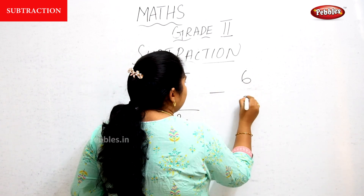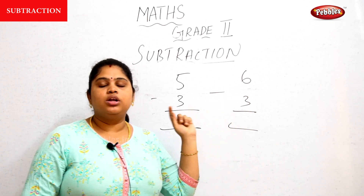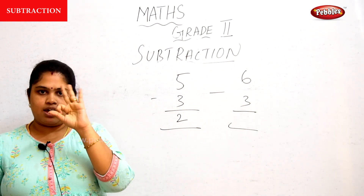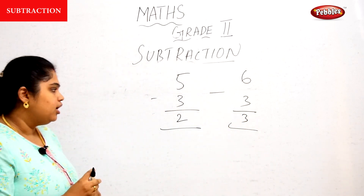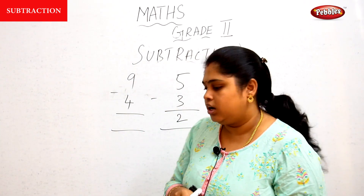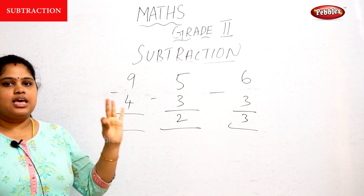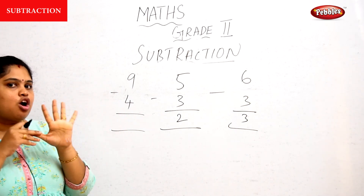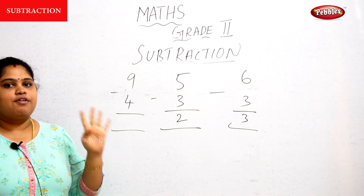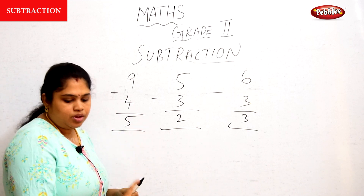Next problem: six minus three. How are you going to perform subtraction using backward counting? From six: five, four, three — stop at three because three is the number given. Next sum: nine minus four. Backward counting from nine: eight, seven, six, five, four — stop at four because four is the number given. How many fingers were raised? Five fingers, so five is the answer.